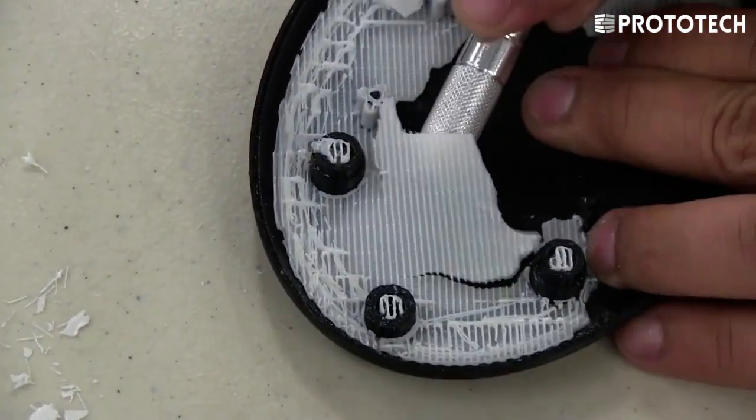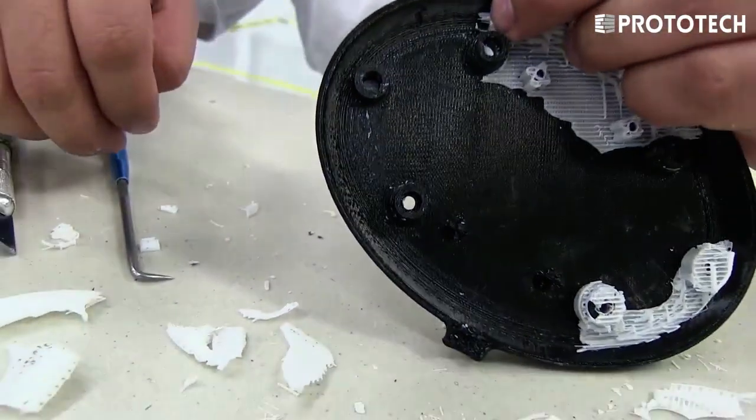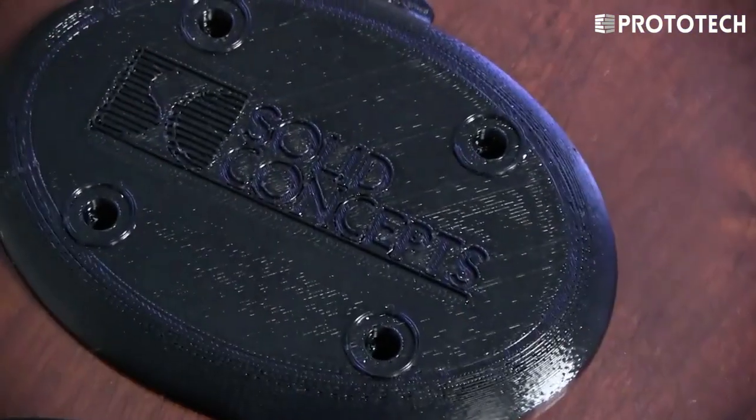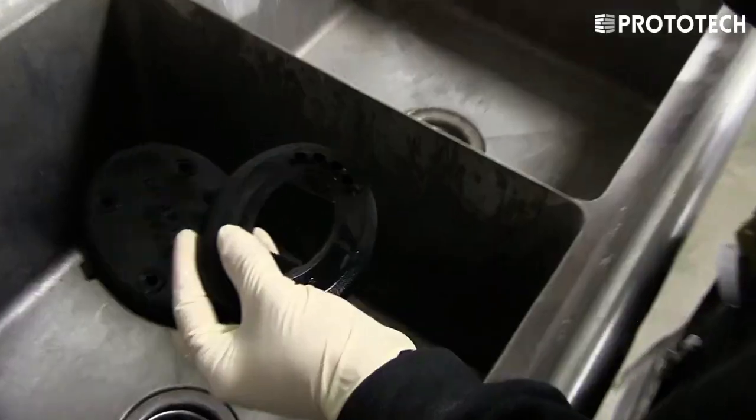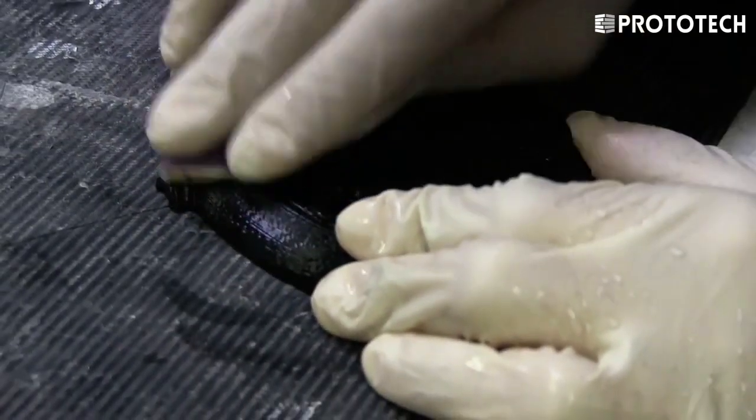Raw FDM parts have visible layer lines. However, service providers offer multiple finishing options to create smooth, even surface parts including hand sanding, assembly, and cosmetic paint.